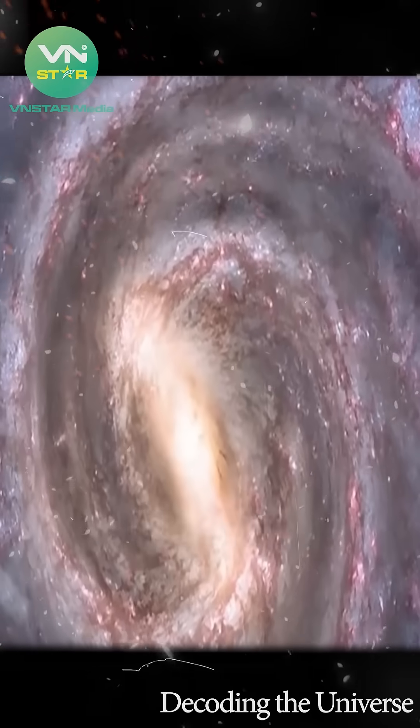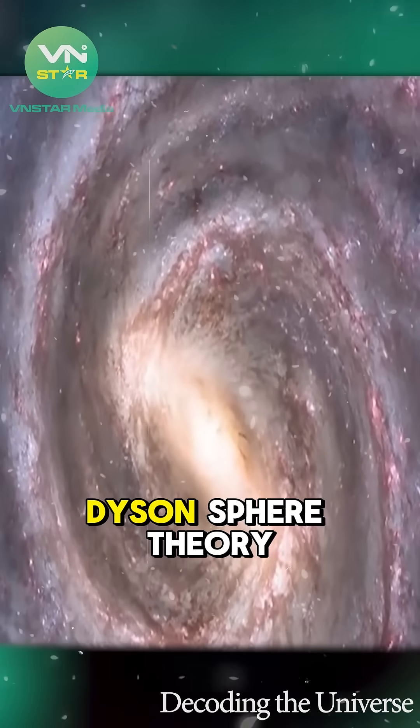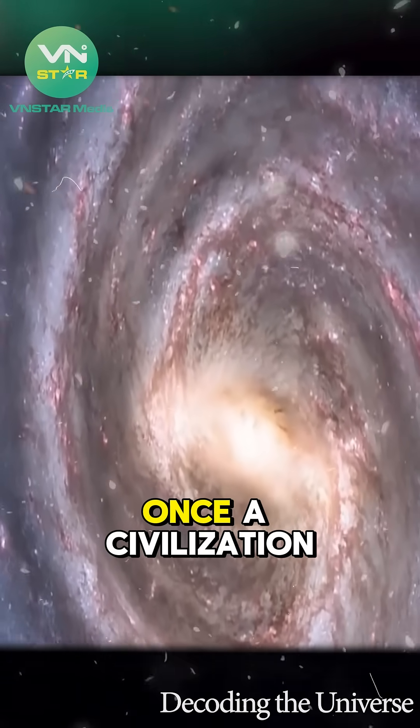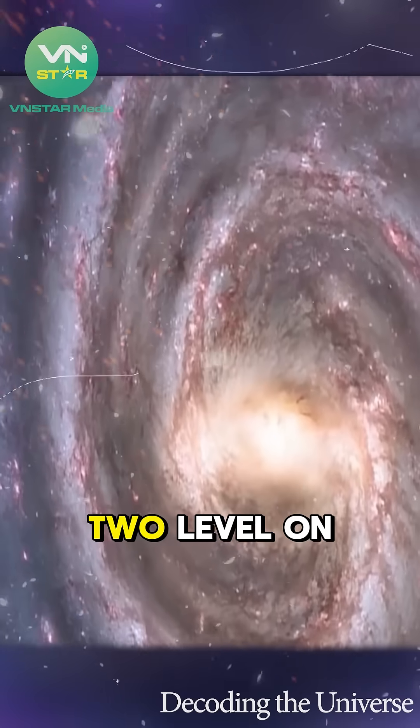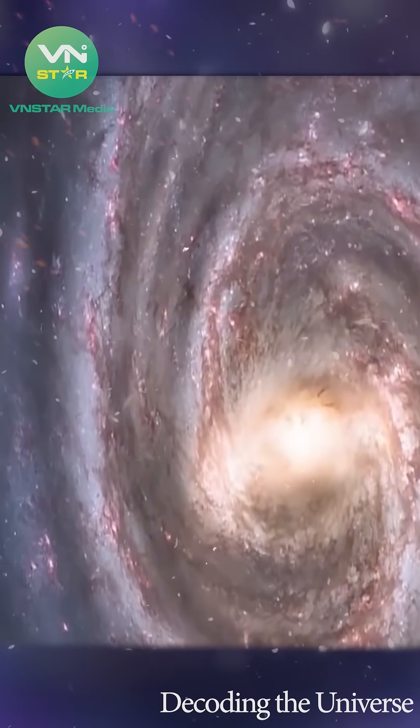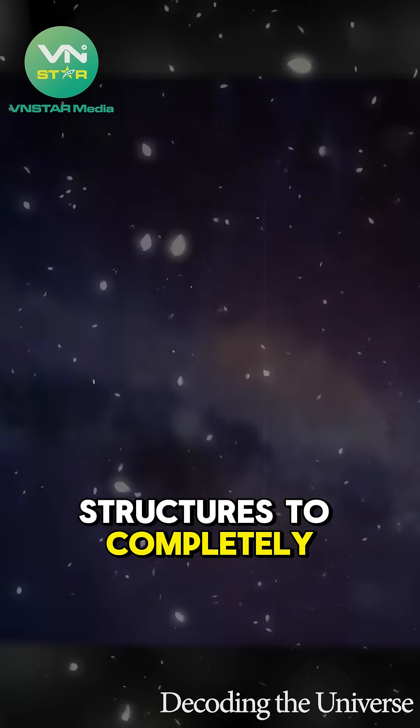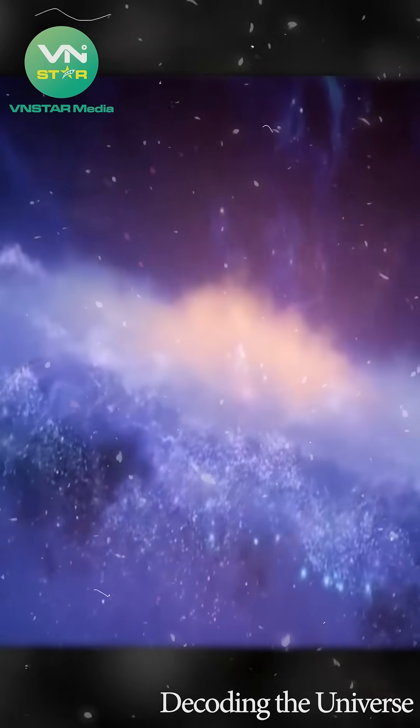Another possibility calls to mind the terrifying Dyson Sphere theory. According to this theory, once a civilization reaches a type 2 level on the Kardashev scale, it would build enormous structures to completely enclose a star and harvest its energy.